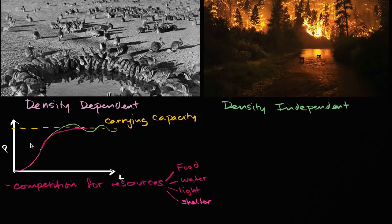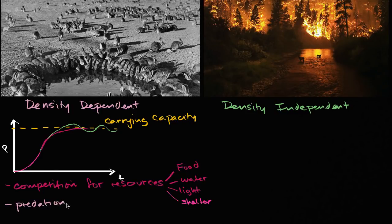What are other density-dependent factors we could think about? Well, another thing is if you are a predator — when the rabbits become this dense, it's much easier to start to pick them off and get your lunch. So predation: once a population gets large enough and dense enough, it might be the predators who can say it's way easier for us to get our lunch.